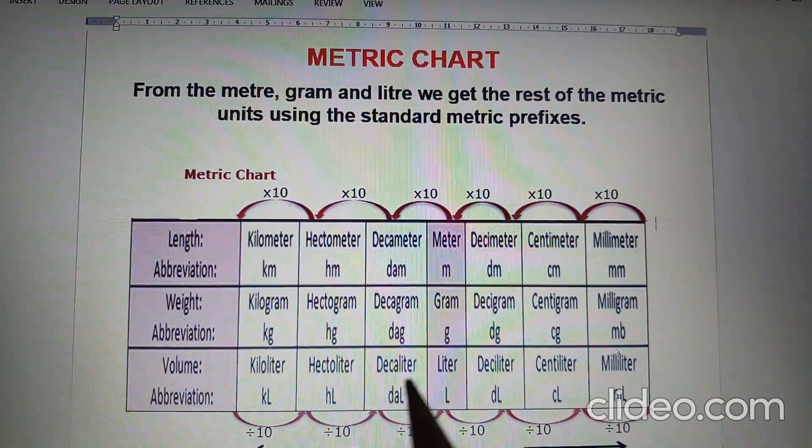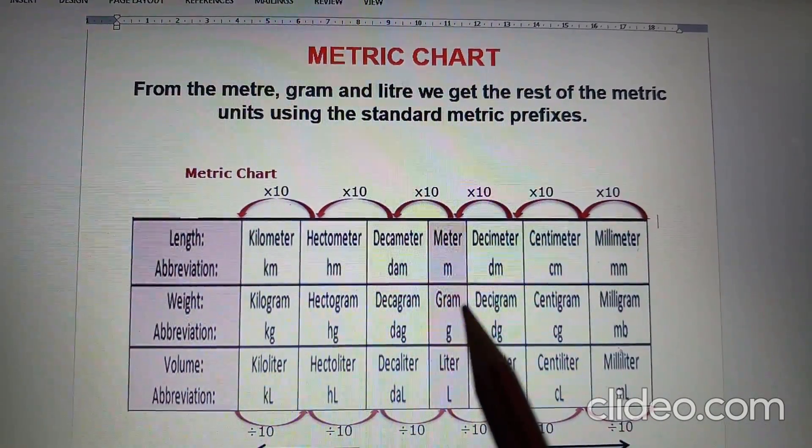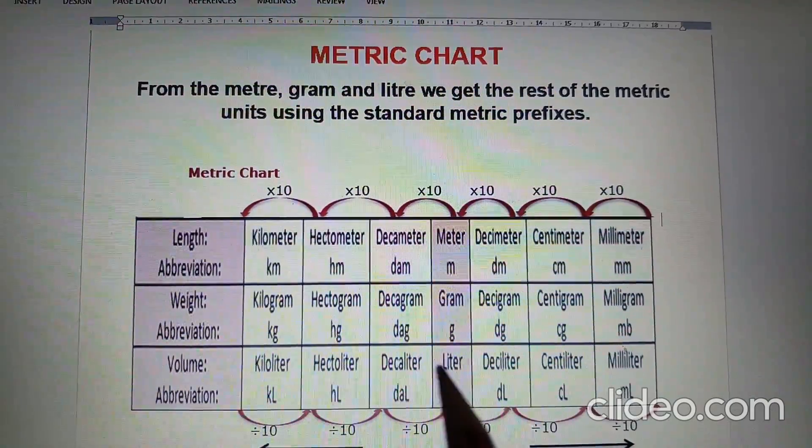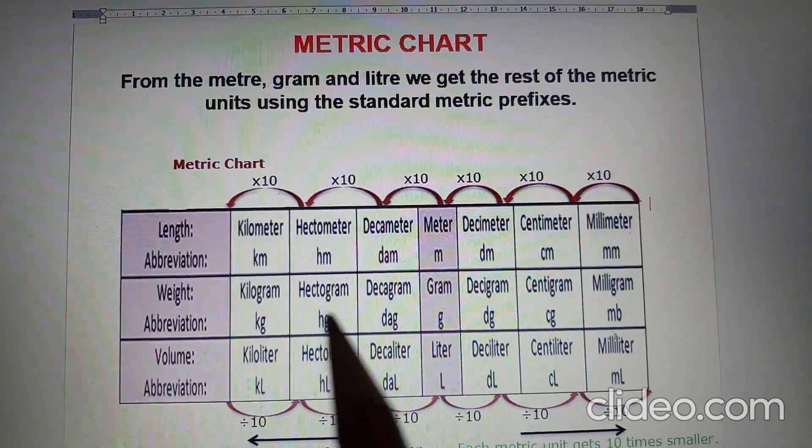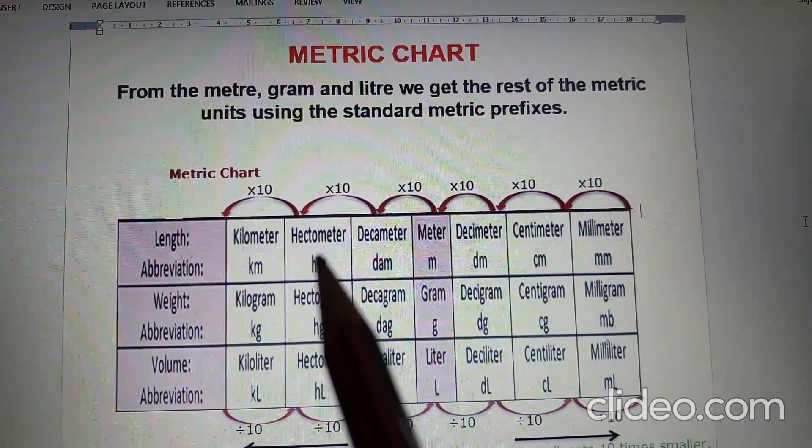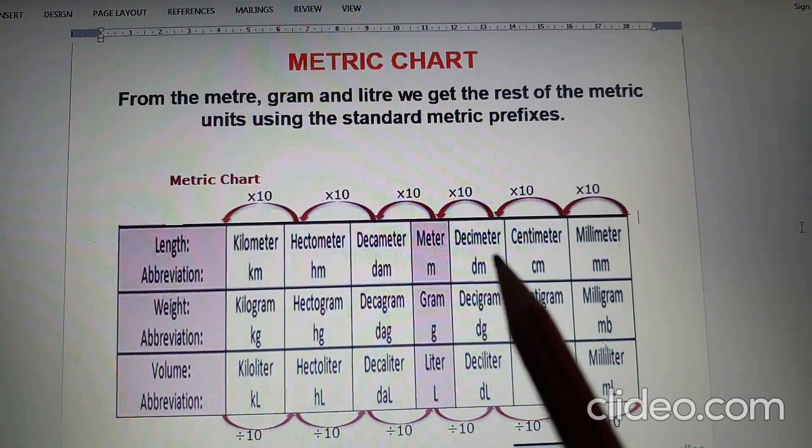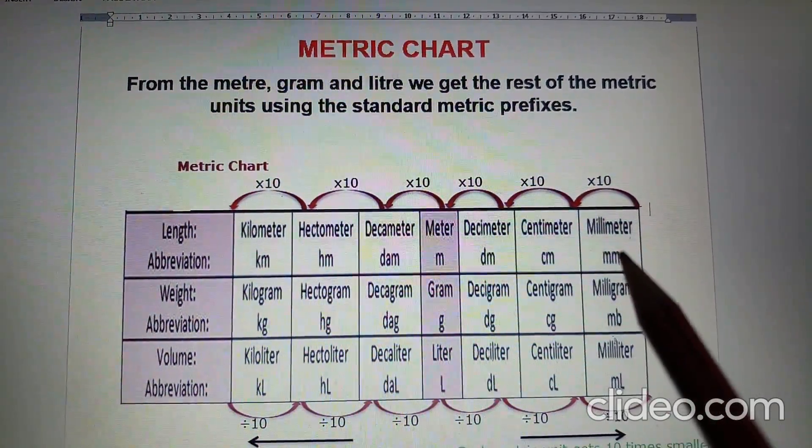This is the metric chart. From the meter, gram, and liter, we get the rest of the metric units using the standard metric prefixes like kilo, hecto, deca, deci, centi, and milli.